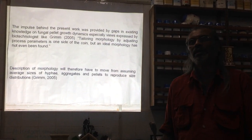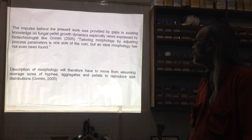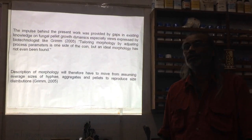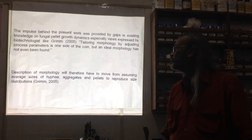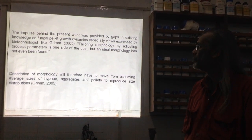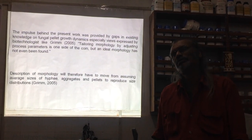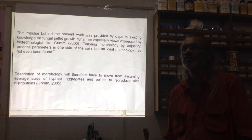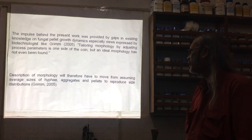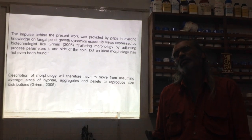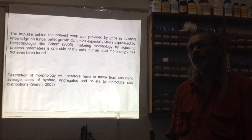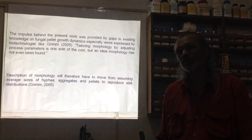Work done by Grim and many others clearly shows that tailoring morphology by adjusting process parameters is one side of the coin, but an ideal morphology has never been achieved. Although attempts have been made for developing industrial strains, there has been no attempt to work out what we call a model fungal pellet. Description of morphology must move from assuming average sizes to reproducing size distributions, requiring more homogeneous, uniform pellet populations.